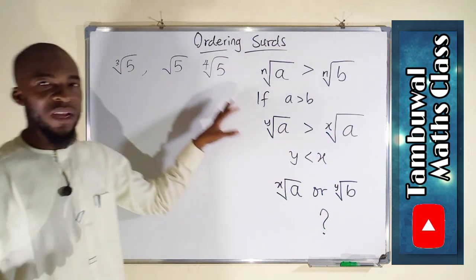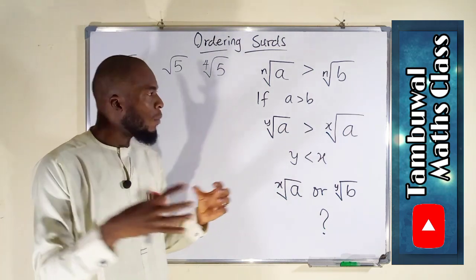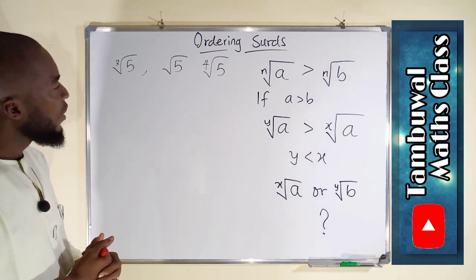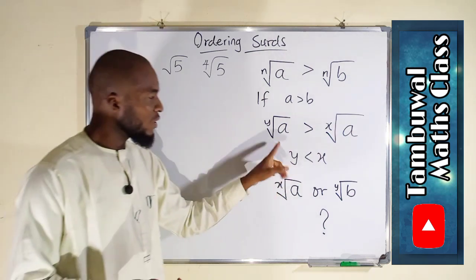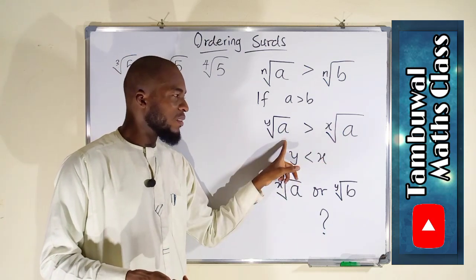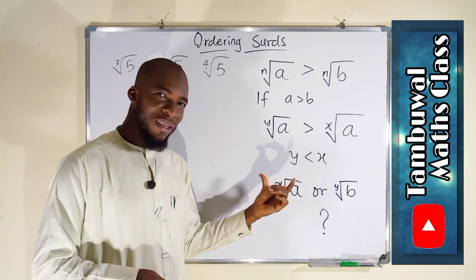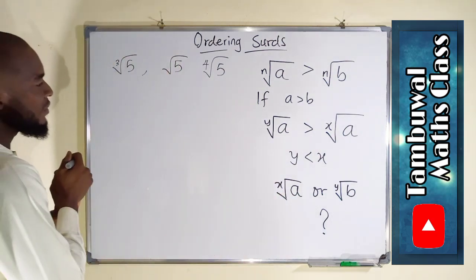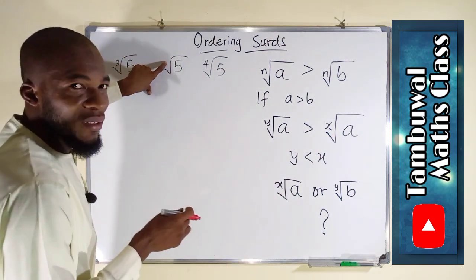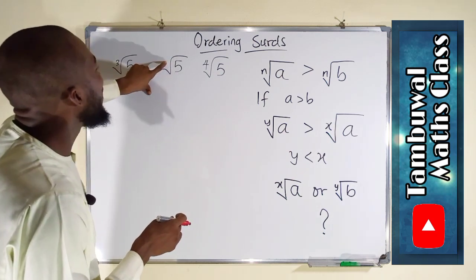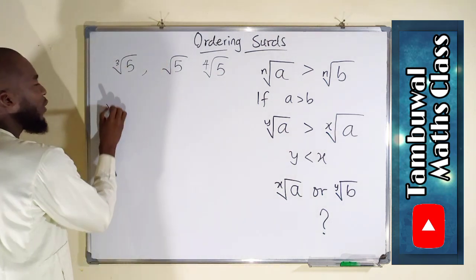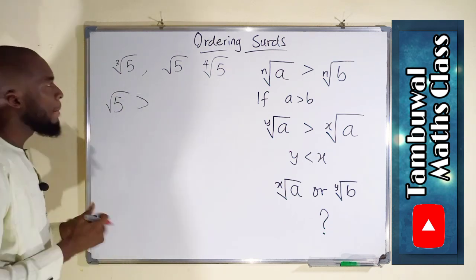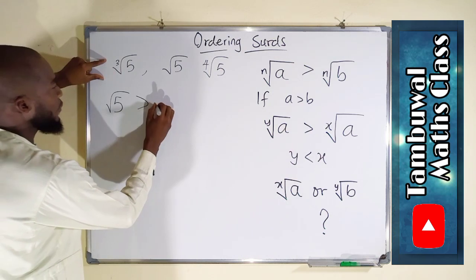They all have the same radicands. From the second condition, the lesser the degree the higher the surd. So we consider the least degree: that is the square root, which has degree 2. Square root of 5 is the greatest, followed by cube root of 5.